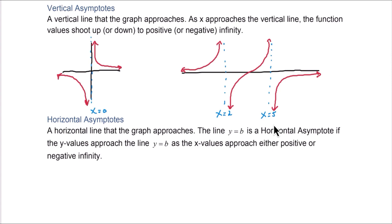A horizontal asymptote is a horizontal line that the graph approaches. The line y equals b is a horizontal asymptote if the y values approach y equals b as x approaches either positive or negative infinity. Looking at the reciprocal function, there is a horizontal line y equals 0 that the graph approaches but never actually crosses — just the x-axis.